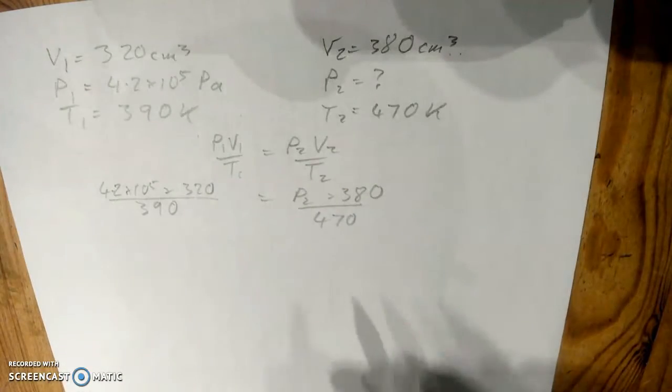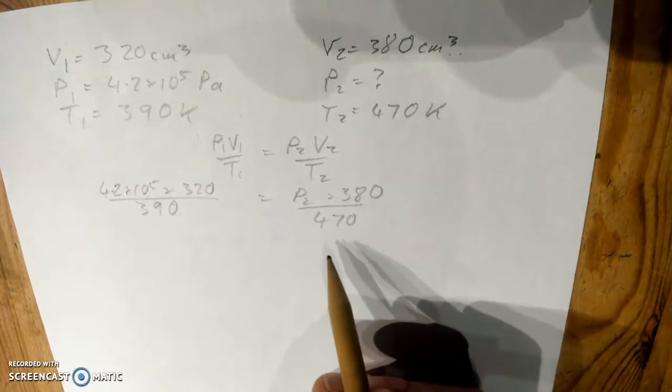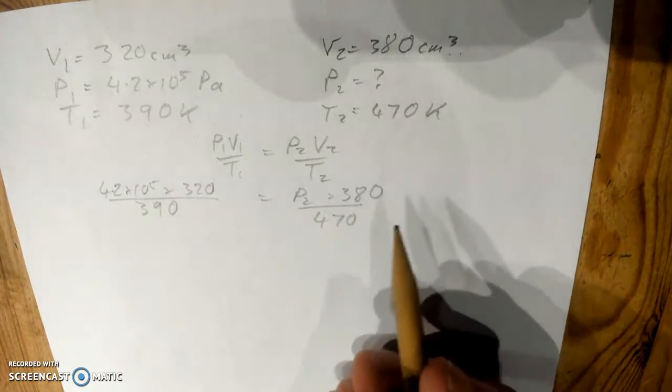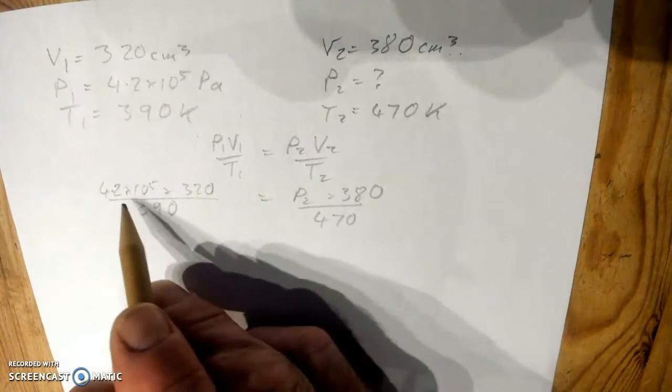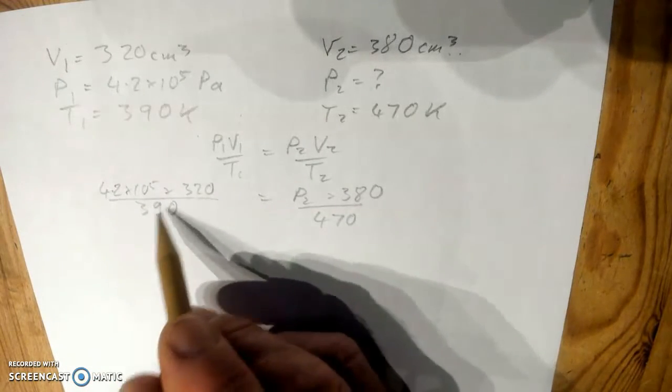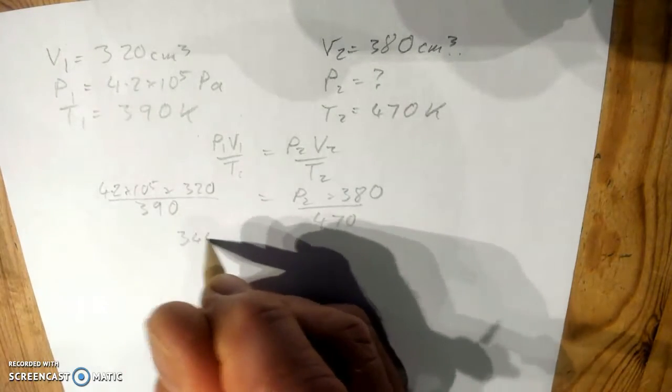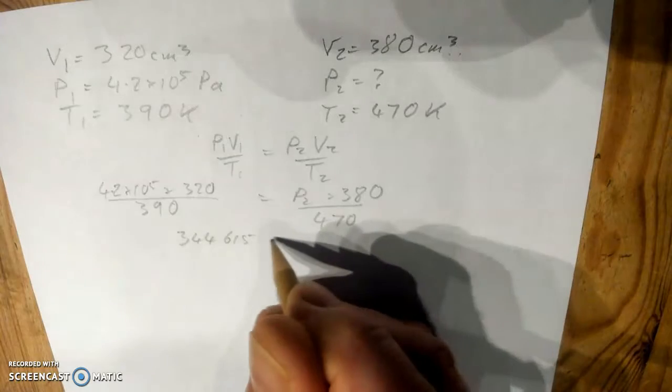What we now want is we now want P2 on its own on the top of the equation, so the 380 and 470 need to disappear from that side of the equation. I'm going to simplify things, I'm going to do that on my calculator, 4.2 times 10 to the power of 5, times 320, divided by 390, gives me 344,615 as a number.